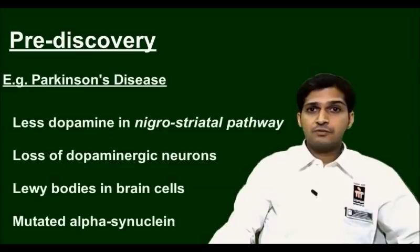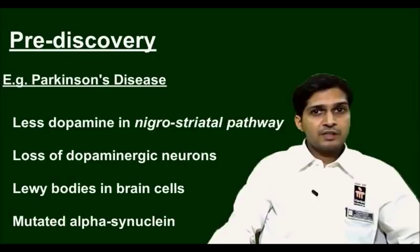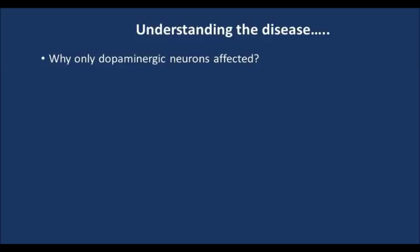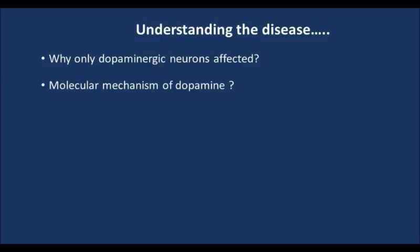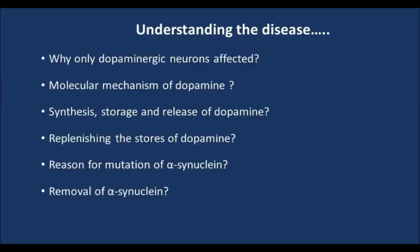You will also find considerable loss of dopaminergic neurons in the nigrostriatal pathway. In the brains of these patients, in the histology, you will find the presence of characteristic intracellular aggregates called Lewy bodies, which are made up of a mutated version of a protein called alpha-synuclein. A deeper understanding of Parkinson's requires understanding: why only dopaminergic neurons are destroyed and not adrenergic or serotonergic neurons; the molecular mechanism of action of dopamine; how dopamine is synthesized, stored and metabolized; whether we can replenish dopamine stores; the reason for mutation of alpha-synuclein; whether accumulated alpha-synuclein can be removed; and the role of oxidative stress, inflammation and apoptosis in Parkinson's disease.